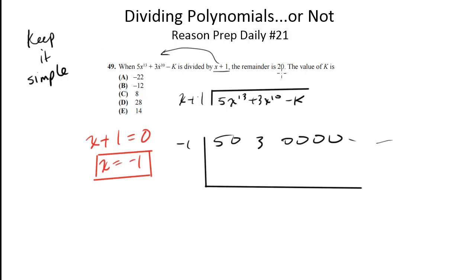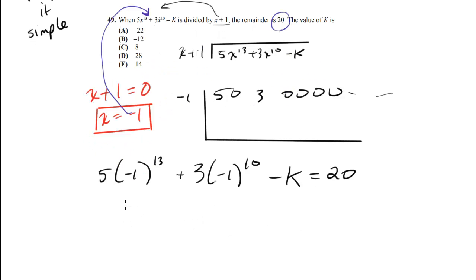But here's the thing. When you're told that this is a remainder, another way to think about this is when you plug negative 1 in for x, out comes 20. So when I plug negative 1 in for x, so 5 times negative 1 to the 13th plus 3 times negative 1 to the 10th minus k, when I plug negative 1 in for x, this equals 20. And now it's just an equation. There's not this whole long division process that I need to complete.